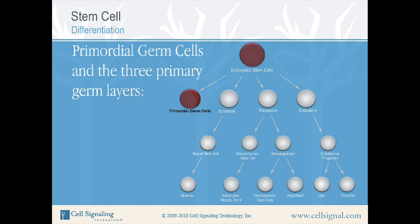Primordial germ cells are the progenitors of the gametes. These cells migrate to the gonads where they undergo meiosis and mitosis to produce sperm and eggs. Two lineage-specific markers for primordial germ cells are the proteins Millie and MeWe. Millie and MeWe are RNA-interacting proteins that are essential for spermatogenesis.